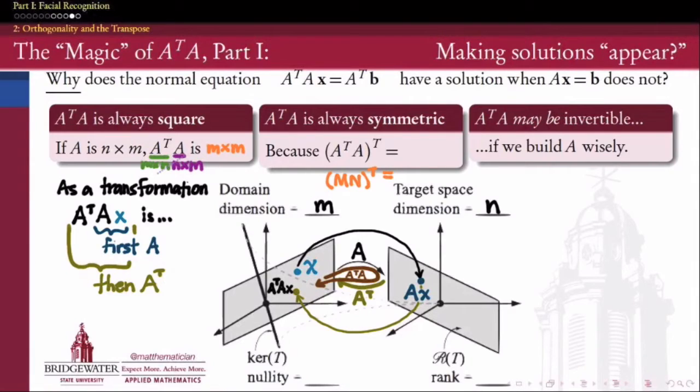which is that if I take the transpose of a product of two matrices, I get the product of those matrices in the opposite order, transposed. So MN, quantity transpose, is N transpose M transpose.